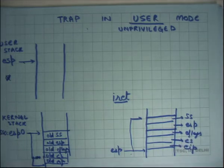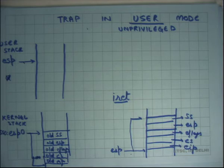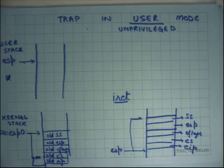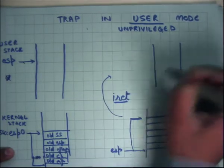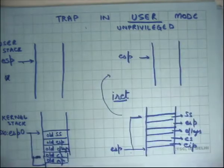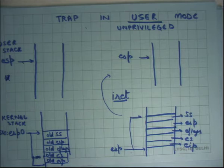When the trap handler eventually calls IRET to return to user space, IRET pops the first three words (EIP, CS, E-flags) and then, seeing that the CS being loaded is an unprivileged CS, knows it is transitioning from privileged to unprivileged mode. It therefore pops two more words to reload SS and ESP, returning to the user stack at exactly the same EIP where execution left off. In the kernel trap case IRET pops three values; in the user trap case it pops five.